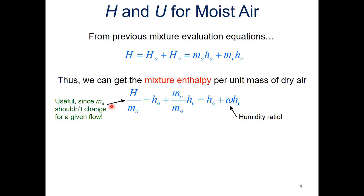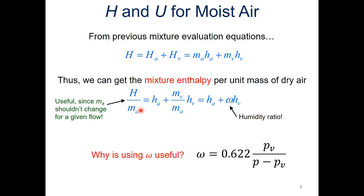Why is using omega useful? Because we have an equation to calculate it using the partial pressure of the vapor — which we can usually find without much difficulty — and the total mixture pressure, which we usually have information on. Also, the mass of dry air remains constant through the processes we'll be looking at. For example, if moist air travels through a cool duct and we cool below the dew point, things condense — but none of the dry air condenses. The dry air continues along; it's only the vapor that condenses.